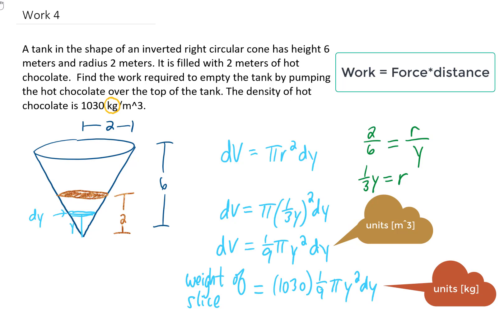Because our units are in kilograms, to find the actual weight of this thing, we need to multiply by the acceleration of gravity, which is approximately 9.8 meters per second squared. That's gonna give us the units that we need for the weight of this slice.